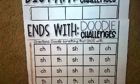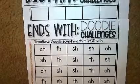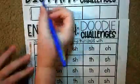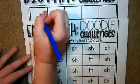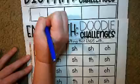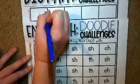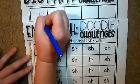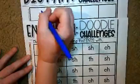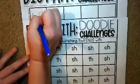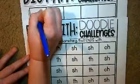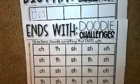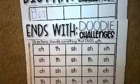The first one I see is the -nch sound. Lunch ends with -nch, so I might draw a sandwich — I like to cut it diagonal — and maybe a lunchbox to go with it. Remember, we don't have to be perfect artists; we just need to try our best.